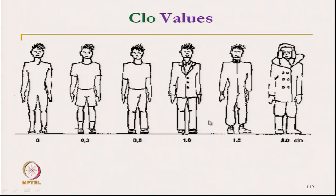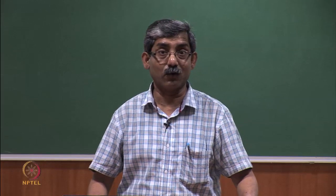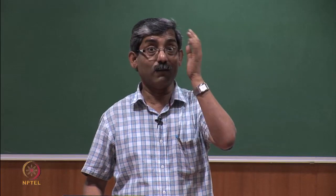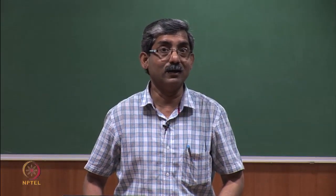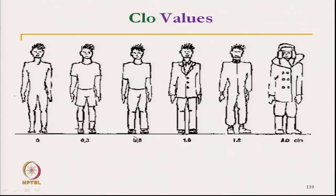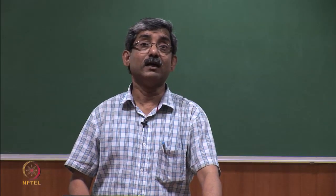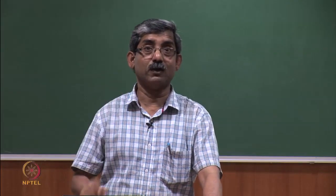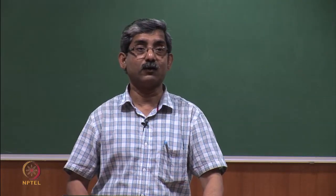What does a clo value mean? A fabric providing 0.5 clo insulation means a person generating 1 met while sitting idle in a well-ventilated air-conditioned room will feel a little cooler. If the clothing is 1 clo, it will balance with 1 met. This way we can derive the insulation of clothing and use the clo value to select a fabric or clothing ensemble for a particular application.